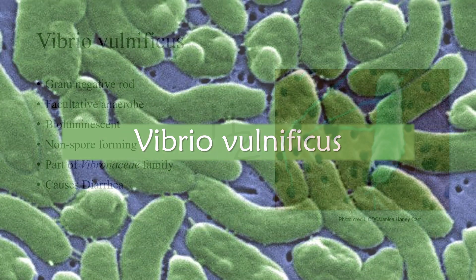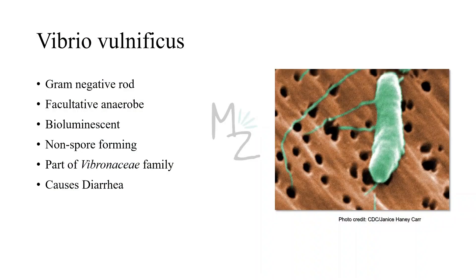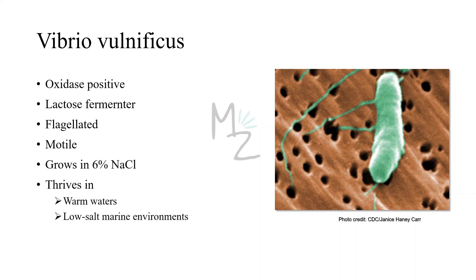Grab a pen and notepad and let's get started. Vibrio vulnificus is a marine organism. It's a gram-negative, rod-shaped bacterium. It's a facultative anaerobe. It is bioluminescent. It does not form spores and is part of the Vibrionaceae family. It causes diarrhea and can cause other infections like wound infections and septicemia. Vibrio vulnificus is oxidase positive, lactose-fermenting, and flagellated — that's why it is motile. It grows best in 6% salt solution and thrives in warm waters and low-salt marine environments.